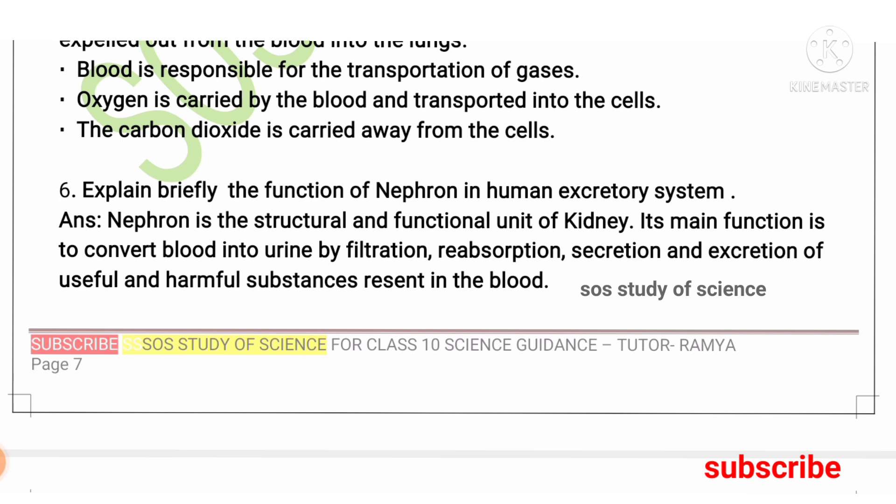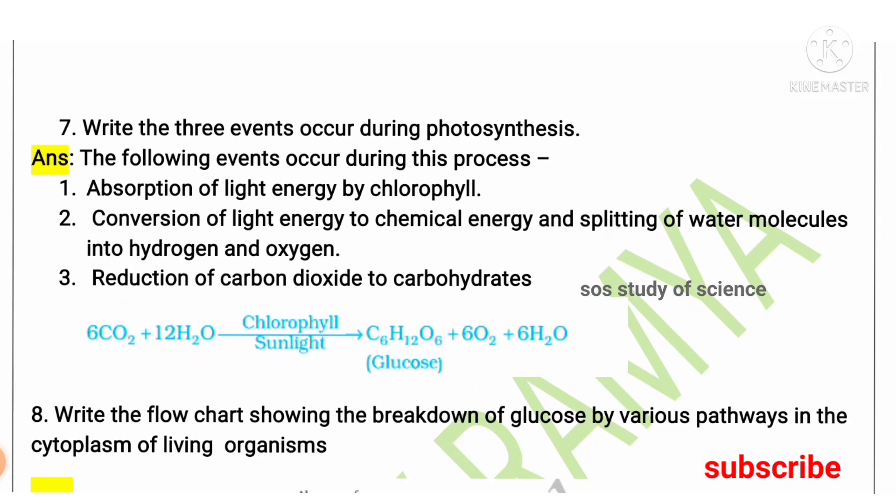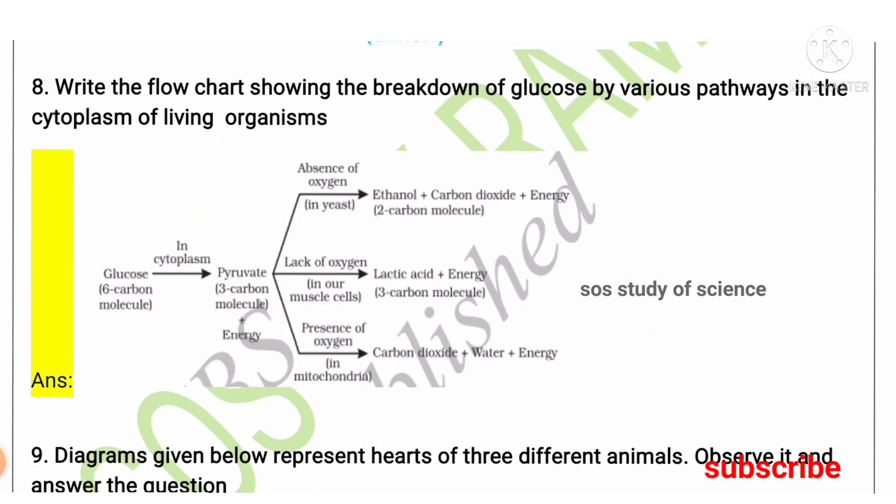Next question: write the three events that occur during photosynthesis. First is absorption of light energy by chlorophyll. Second is conversion of light energy to chemical energy and splitting of water molecules into hydrogen and oxygen. Third is reduction of carbon dioxide to carbohydrate. This can be asked for three to four marks. Also learn the chemical equation: carbon dioxide combines with water in the presence of chlorophyll and sunlight to form glucose, along with release of oxygen and water.